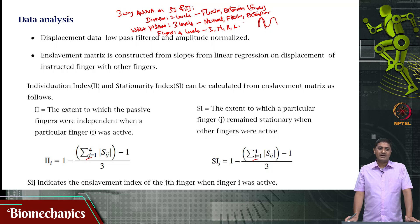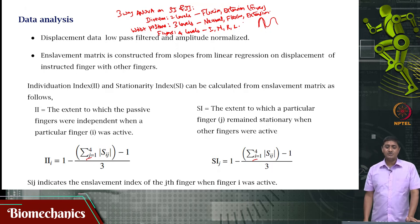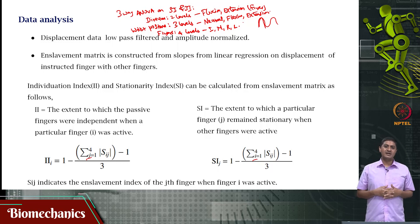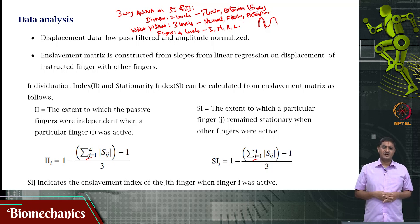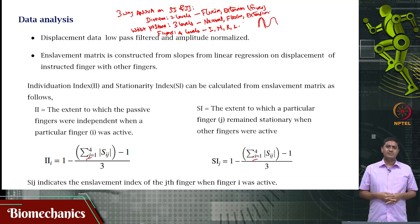What we found, I will discuss in the next video. In this video, we looked at the experimental approach: electromagnetic tracking sensors placed on all segments of all fingers, analysis restricted to distal phalanges, computation of individuation index and stationarity index, and a three-way ANOVA as discussed. With this, we come to the end of this video. Thank you very much for your attention.